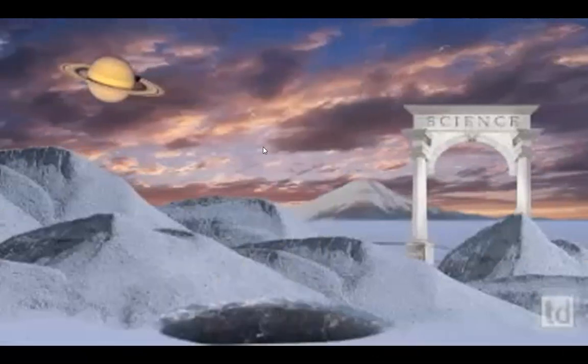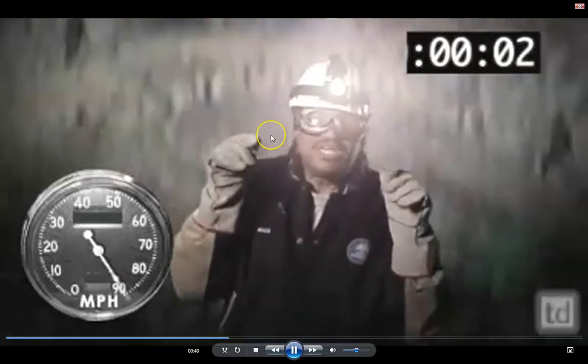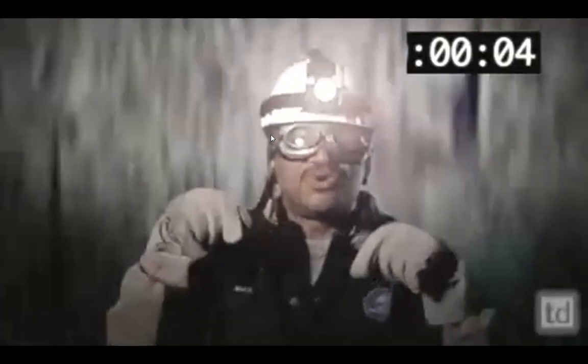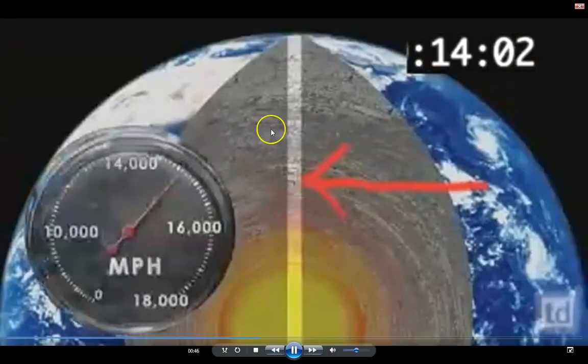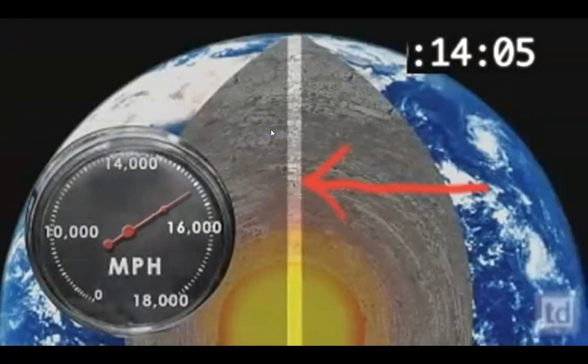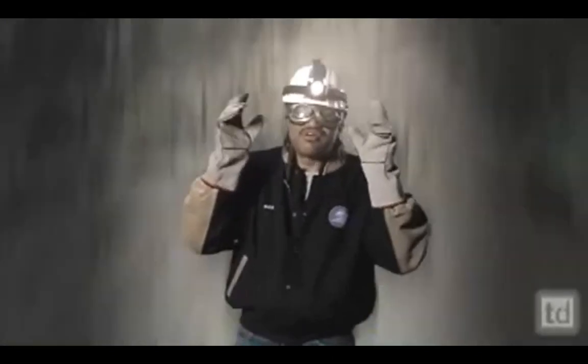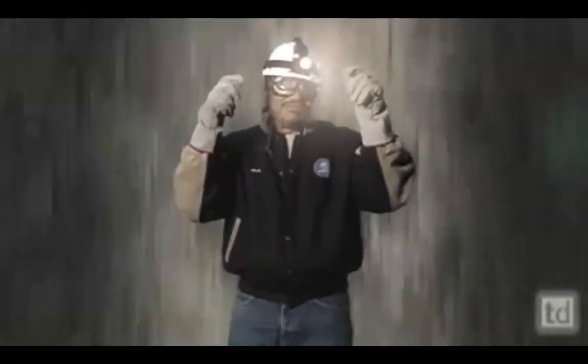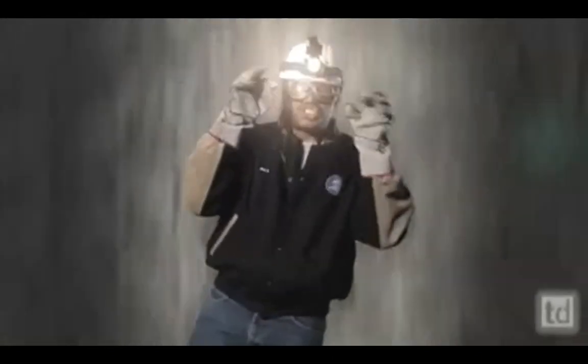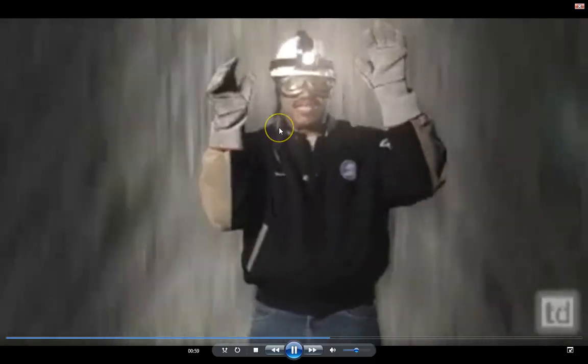All right. Here we go. I fall gaining speed as Earth's mass pulls me towards the center. 14 minutes into my fall, halfway to the center, and I've accelerated to more than 15,000 miles an hour. Here, there's only half the force of gravity than on the surface. So I'm still gaining speed, but at a slower rate than when I first jumped in.